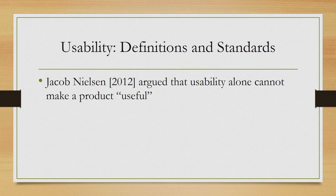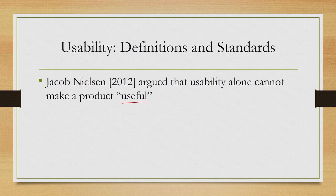Jacob Nielsen in 2012 argued that usability alone cannot make a product useful. So there are two things — one is usable, and the other is useful — and we should distinguish between the two. Usability is about a perception that the product is going to be easy to use, whereas useful means whether the product serves whatever the user needs to achieve. According to Nielsen, usability alone is not sufficient to make a product useful.